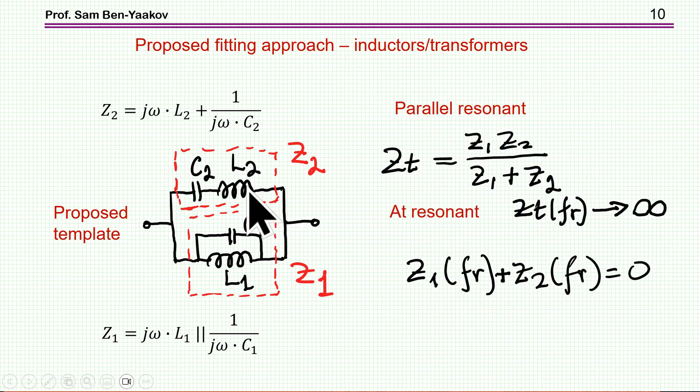If I have now these two parallel subsections here, then the total impedance is just these two in parallel. And if this structure is going to have a resonant at a given frequency, this would mean that this has resonance.